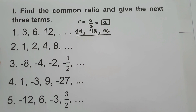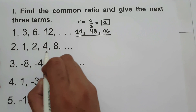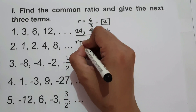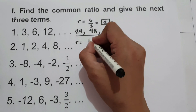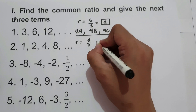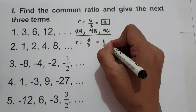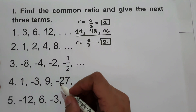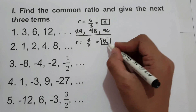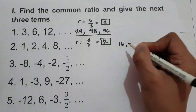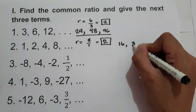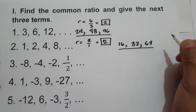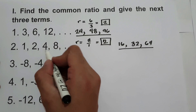What about number 2? We have the sequence 1, 2, 4, 8. Let's find the common ratio by dividing the second term by the first term: 2 divided by 1, so the common ratio is 2. Then the next 3 terms are 8 times 2 is 16, 16 times 2 is 32, and 32 times 2 is 64. So these are the next 3 terms in the sequence 1, 2, 4, 8.